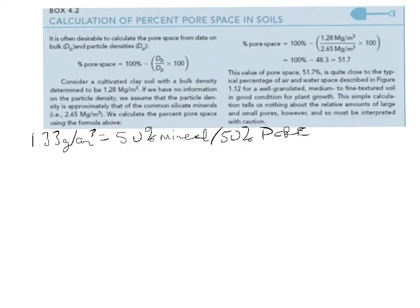So we have an equation for that, and that equation is: when we want percent pore space, we will have 100% minus this little factor, which is the bulk density (d lowercase b) divided by the particle density (d lowercase p, or d sub p), times 100.